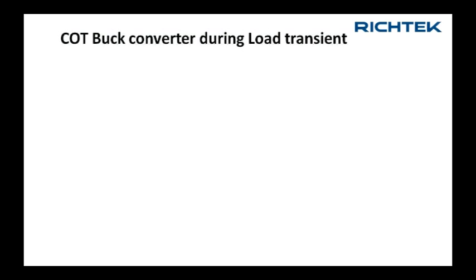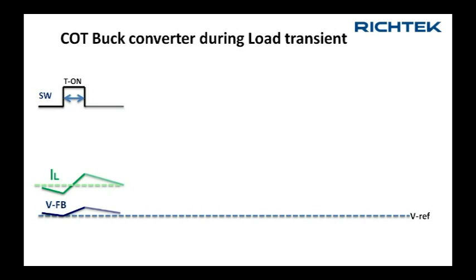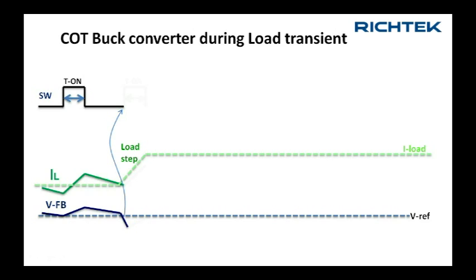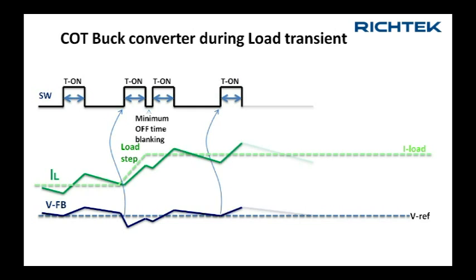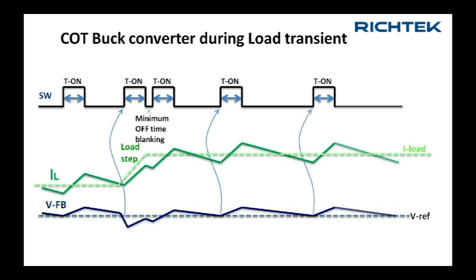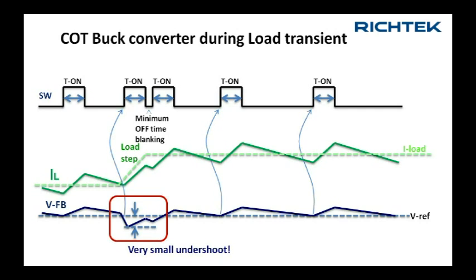Now let's see what happens during load transients. We start with steady state switching. When we suddenly increase the load, the output voltage drops quickly and almost immediately a new on-time is triggered and inductor current rises again. When this is insufficient to reach the new load level, another t-on is generated after a short blanking time. When the new load level is reached, the converter switching stabilizes again.